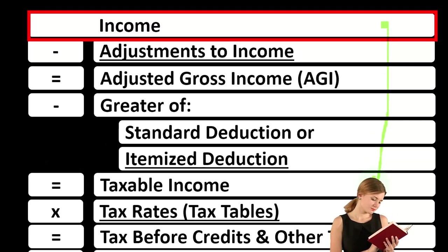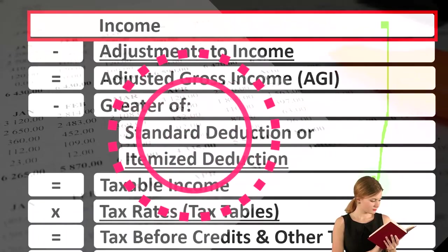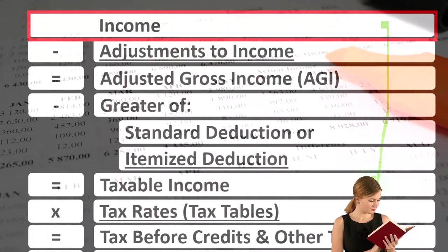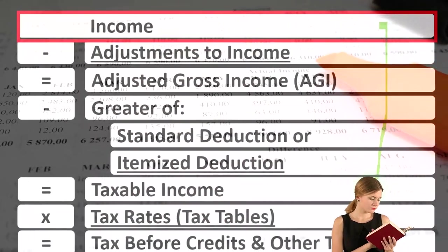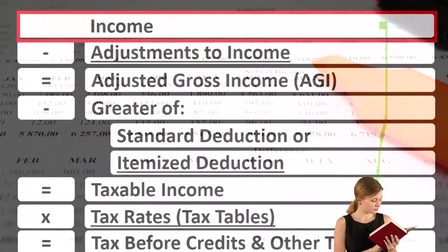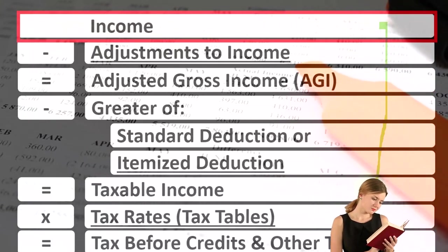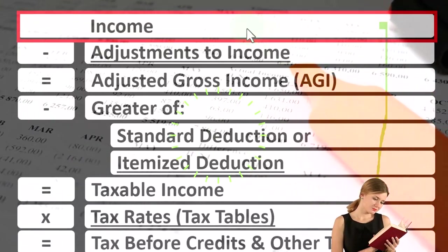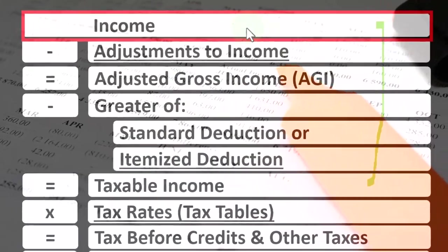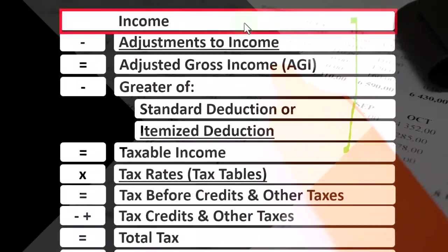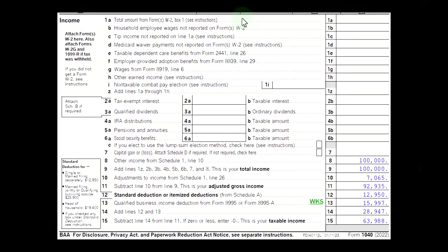Schedule C is in essence an income statement in and of itself — income minus expenses — giving us that net income that would then flow from Schedule C into line one of income on the income tax formula, page one of Form 1040.